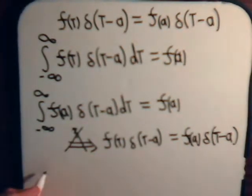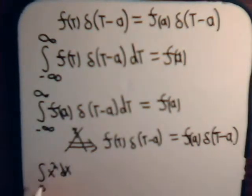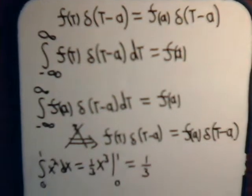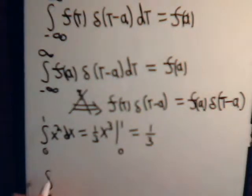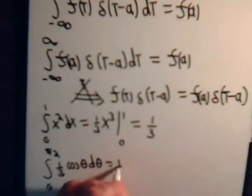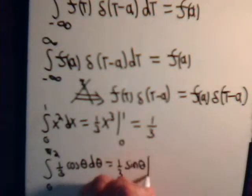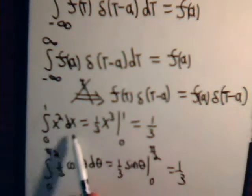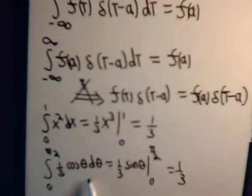For example, suppose we have the integral of x squared dx from 0 to 1. That equals 1/3 x cubed from 0 to 1, which equals 1/3. Now if we have the integral of 1/3 cosθ dθ from 0 to π/2, that equals 1/3 times sine of θ from 0 to π/2, and sine of π/2 is 1, so that also equals 1/3. But obviously what's inside the integrals is not the same — so just because this integral equals this integral doesn't mean that what's inside the integrals has to be equal to each other.